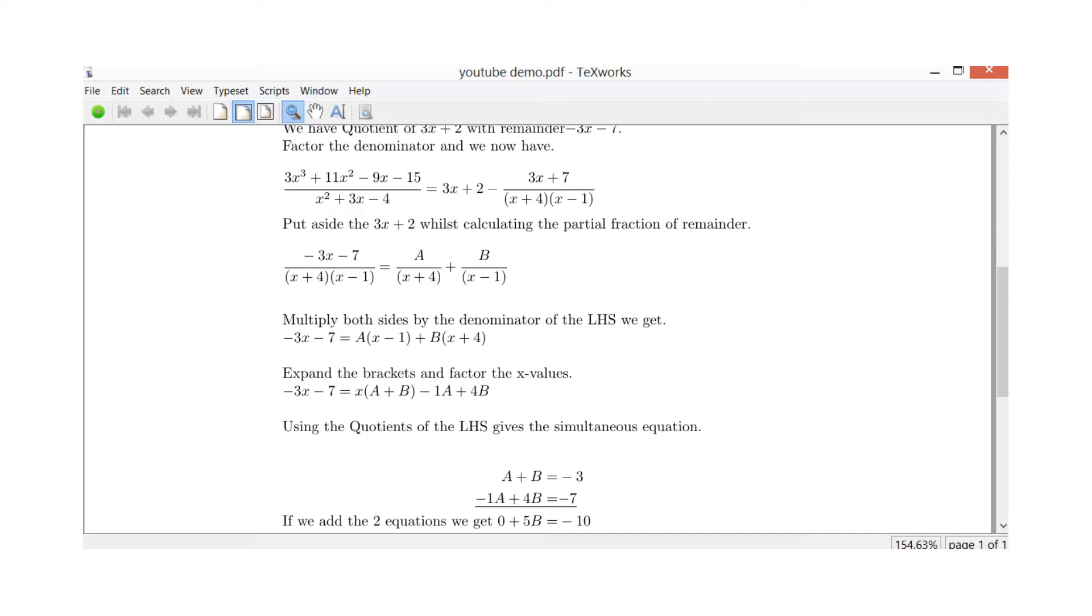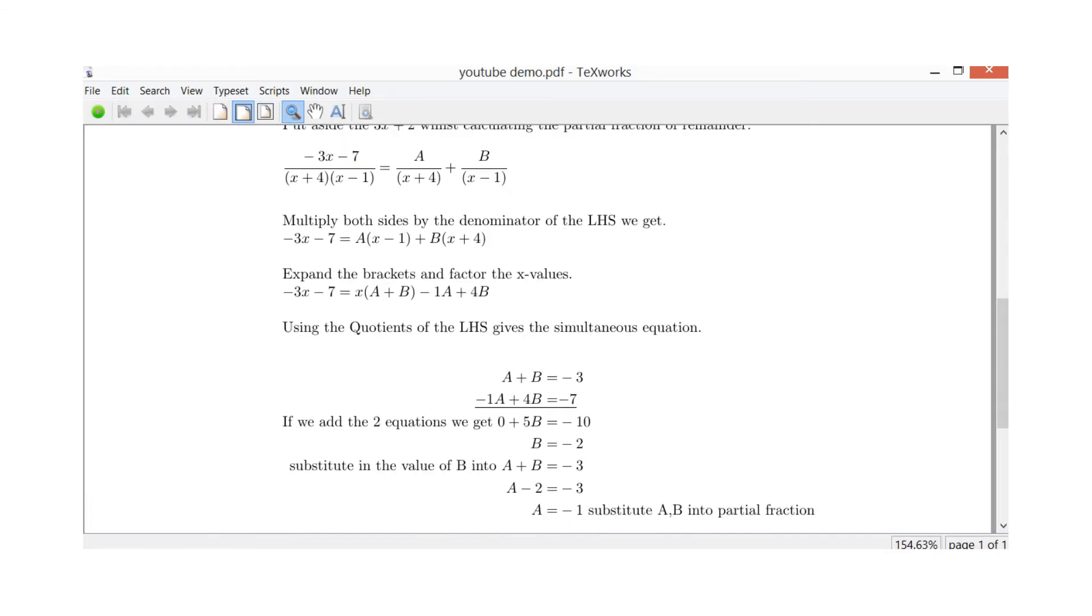So we've got minus 3x minus 7 equals A times x minus 1 plus B times x plus 4. So multiply out the A with the x minus 1 and B with the x plus 4. We get x times A and x times B. So we just do x times A plus B, get the x on its own. And then the simple units. We've got the A times minus 1 and the B times plus 4. So we get minus 1A plus 4B. So now put those into some sort of simultaneous equation situation so we can solve for what these coefficients are. So A plus B equals minus 3. And minus 1A plus 4B will come to minus 7.